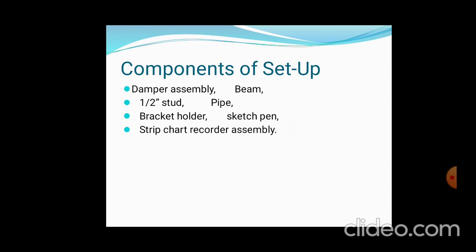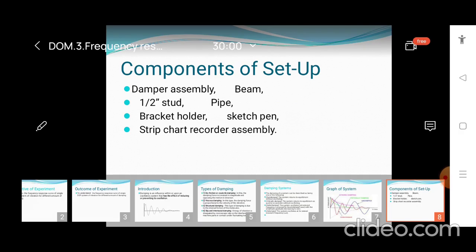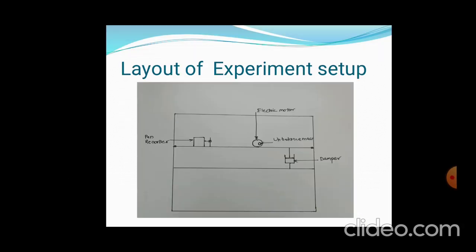The components include a damper assembly, stud system, bracket holder, strip chart, sketch pin, beam, and pipe. This simple layout shows the damper system, unbalanced mass, and a pen recorder — quite a simple setup.